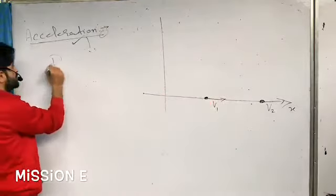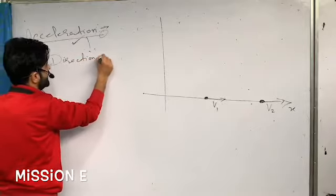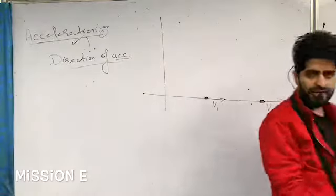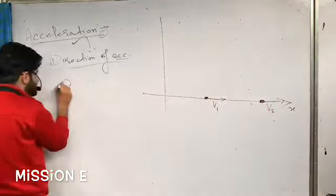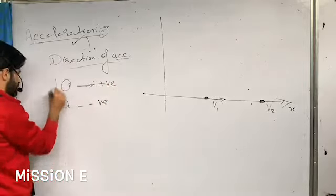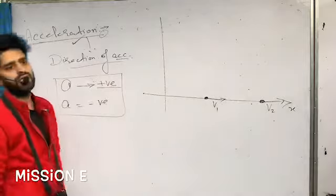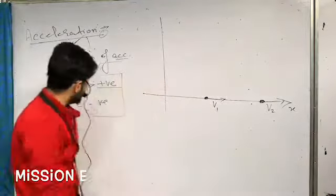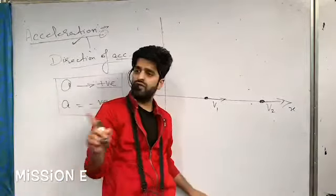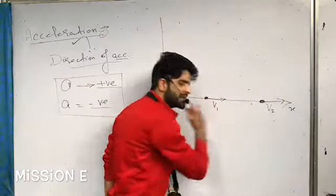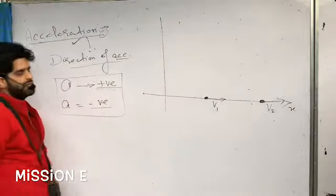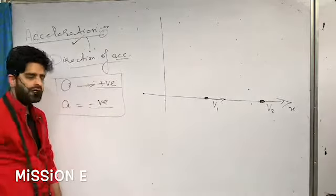Now the direction of acceleration. Since we are dealing with motion in one dimension, acceleration has two possible signs: either positive or negative. Positive acceleration means acceleration is towards the right; negative acceleration means acceleration is towards the left. If it is motion along the y-axis, positive acceleration means upward and negative means downward.